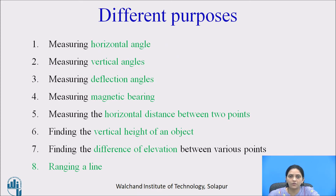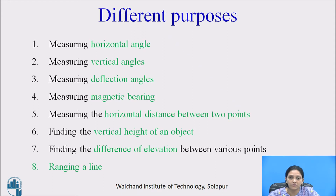These are the different purposes for which theodolite is useful: measuring horizontal angle, measuring vertical angle, measuring deflection angle, measuring magnetic bearing, measuring horizontal distance between two points, finding vertical height of an object, finding difference of elevation between various points, and ranging a line. So the theodolite is useful for angle measurement, distance measurement, height and elevation, and ranging lines. It is more advanced than the compass and the level instrument.